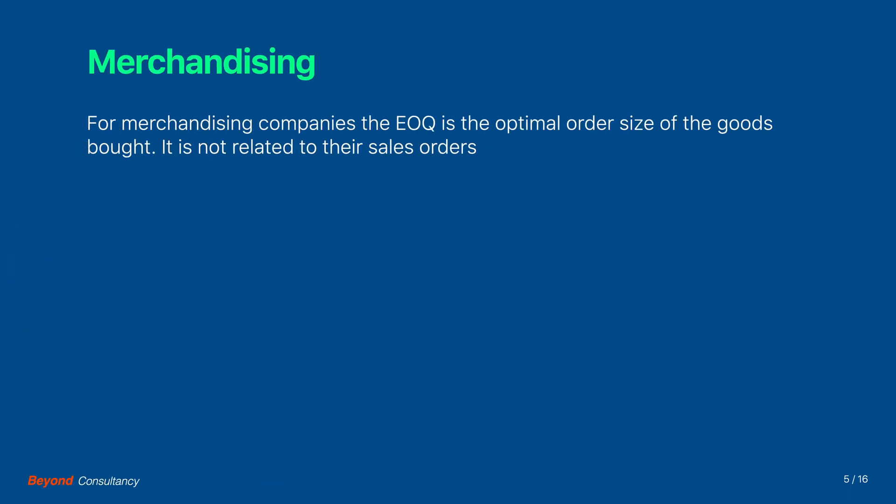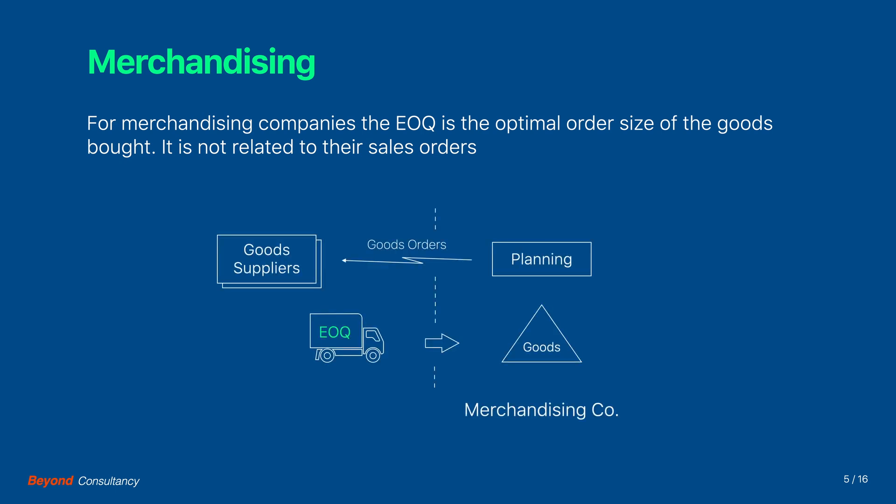For merchandising companies, the economic order quantity is the optimal order size of the goods bought — neither here is it related to their sales orders. The planning department of a merchandising company orders the goods with the suppliers. The goods are received and stored in the goods warehouse. Also here the question is to find the right balance between the ordering and the inventory costs.